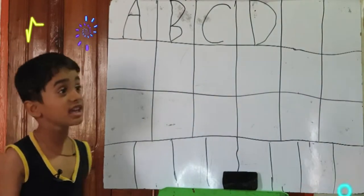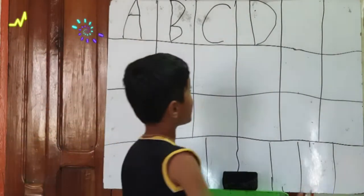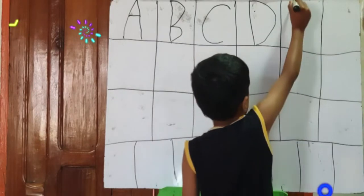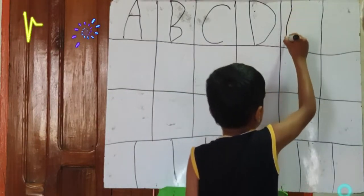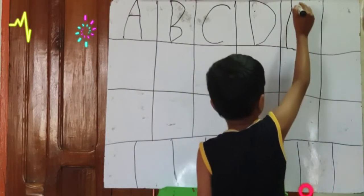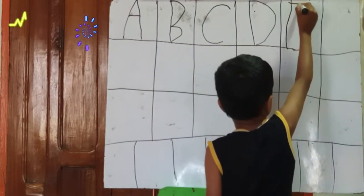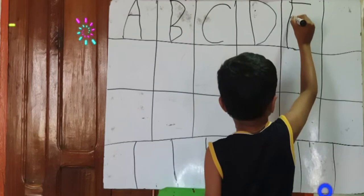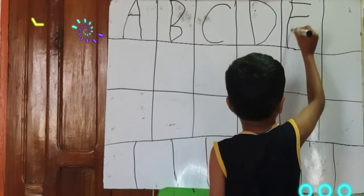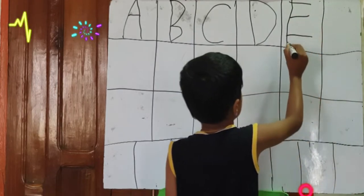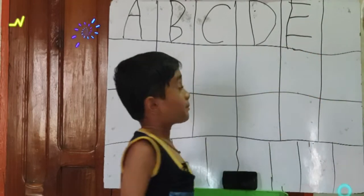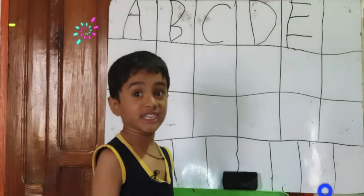Now we are going to learn E. One standing line, one sleeping line, sleeping line, sleeping line. That makes E.